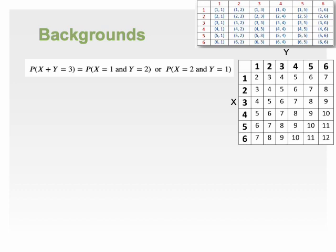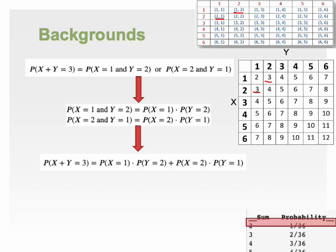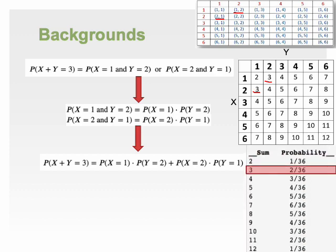Finding the probability of rolling a sum of three. For example, we need to count the number of favorable outcomes, which is 2. The combinations are 1 plus 2 and 2 plus 1. The probability of rolling a sum of 3 is then 2 favorable outcomes out of 36, which simplifies to 2 divided by 36 as shown in this table.